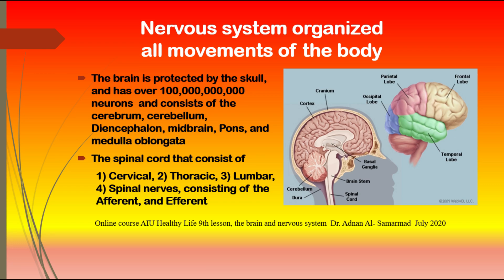The spinal cord is the connection between the brain and the nerves, divided into four regions: cervical, thoracic, lumbar and spinal nerves. The spinal nerves consist of afferent neurons, which transport information from the body to the brain, and efferent neurons, which transport signals from the brain to the body.